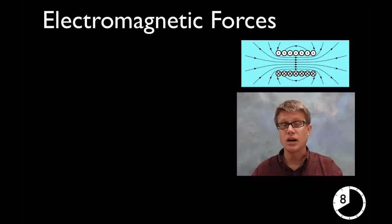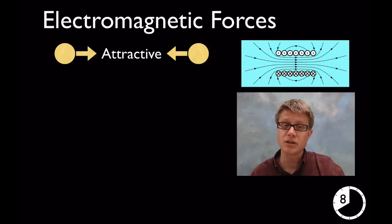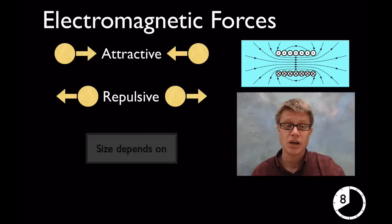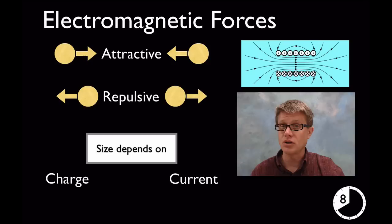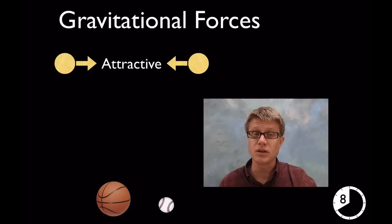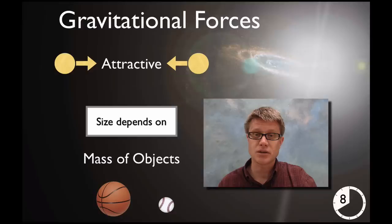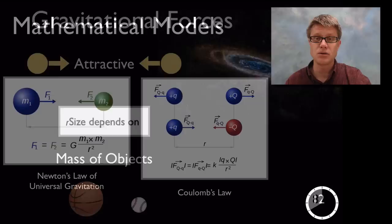In middle grades, introduce electromagnetic forces — electricity, charge, and magnetism. These can be attractive for opposite charges or repulsive for like charges. Their size depends on the charge itself, the current or flow of electrons through a wire, and the strength of the magnet. Also discuss gravitational forces, which are always attractive and whose size only depends on the mass of the objects. Gravitational forces hold the whole universe together, and the amount of mass determines the future of the universe.